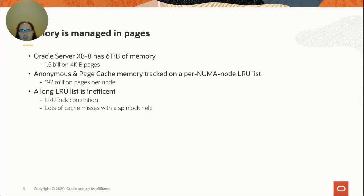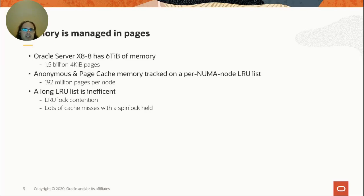We do divide things up per NUMA node, so there's only 192 million pages per node. But still, 192 million pages is a lot. And in case you're thinking this only affects large computers — it doesn't. My laptop has 16 gigabytes of RAM, that's four million pages. My phone has four gigabytes of RAM, so even my phone is dealing with managing a million pages.